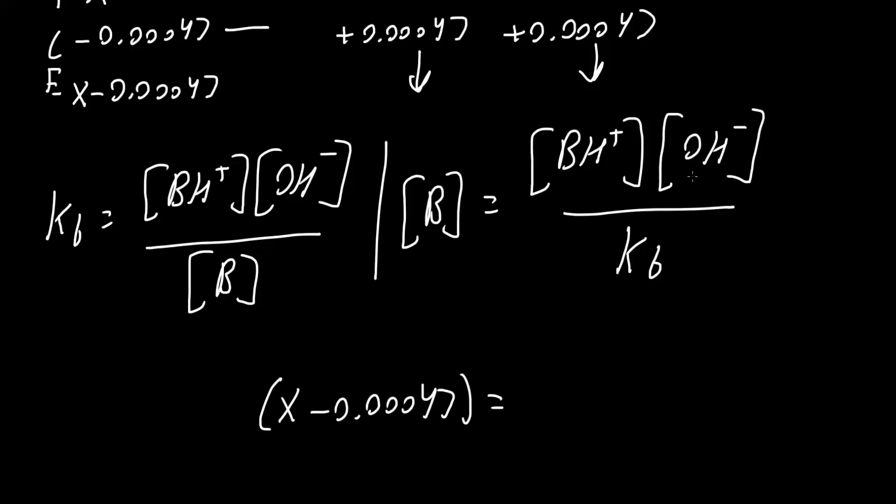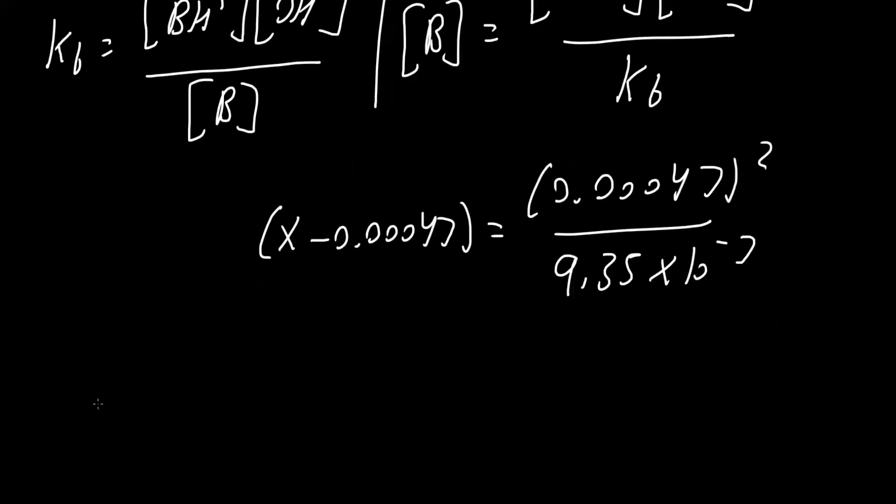And BH plus and OH minus were 0.00047. So we could say that this number squared, and Kb was 9.35 times 10 raised to negative 7.